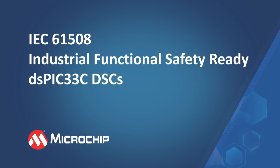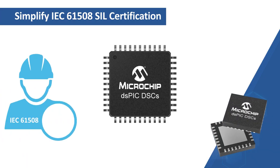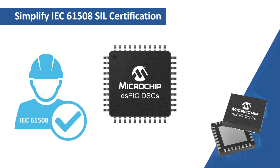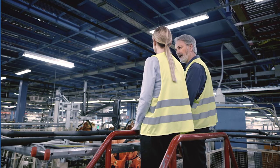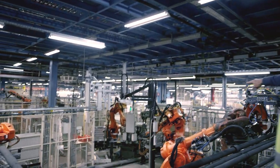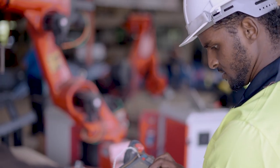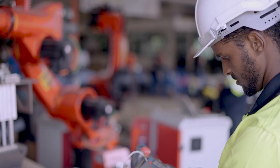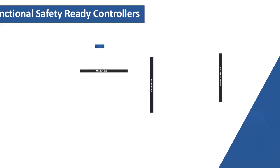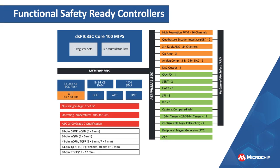In this video, we will give an overview of our Functional Safety Ready DSPIC-33C Digital Signal Controllers or DSCs. These DSCs can help you simplify the IEC-61508 SEAL Certification of your industrial systems. The growing need for functional safety in industrial systems adds another design element for embedded engineers to consider. Adopting safety design methods as per IEC-61508 can reduce the risk of industrial accidents. Our broad portfolio of IEC-61508 Functional Safety Ready DSPIC-33C DSCs offers hardware safety features to simplify the design of your safety-critical industrial applications.